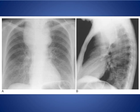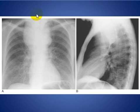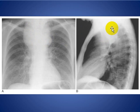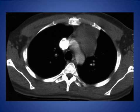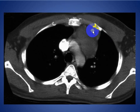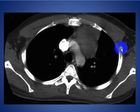Here you see a mass lesion in the superior anterior mediastinum extending from the neck to the superior anterior mediastinum, representing thyroid gland enlargement. Here is another mass in the anterior mediastinum, midline to the left side — this is a thymoma.